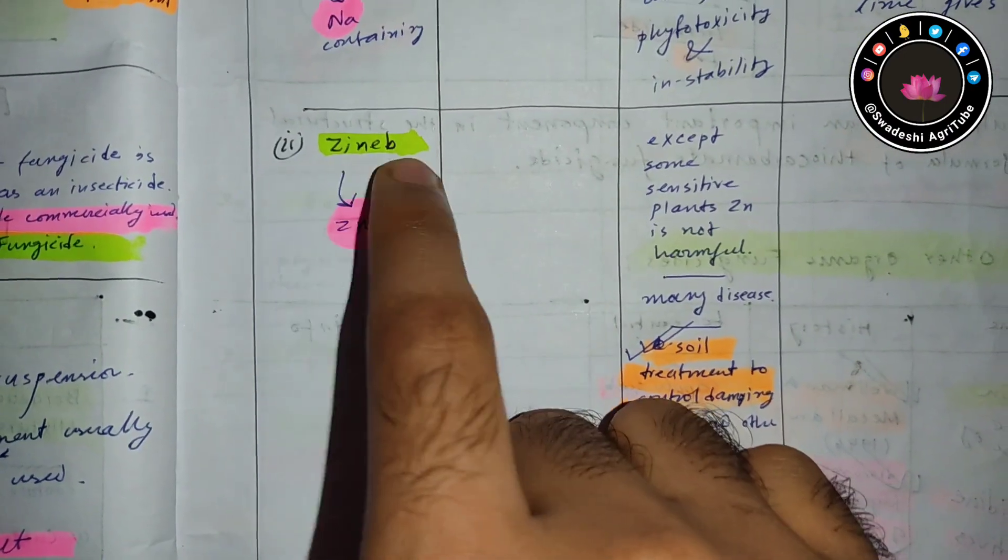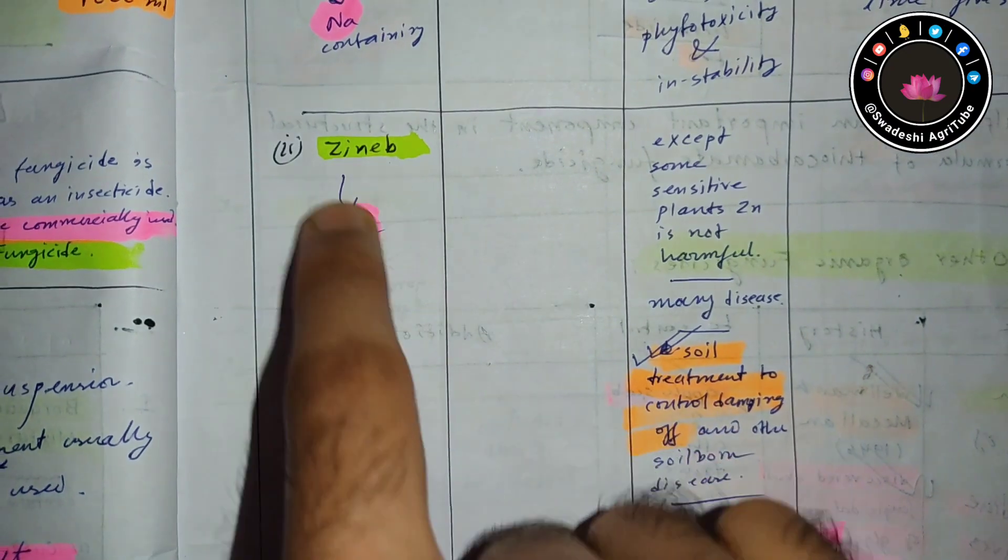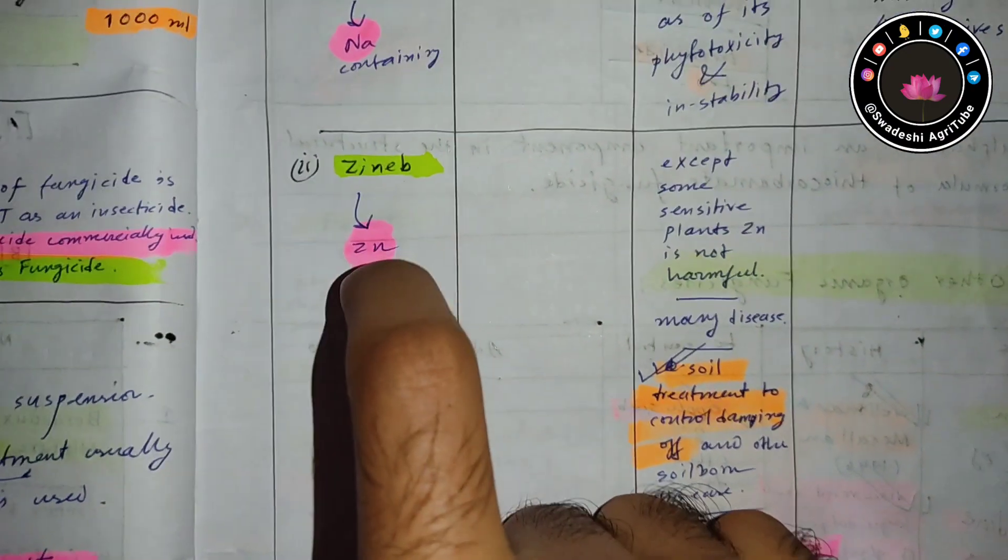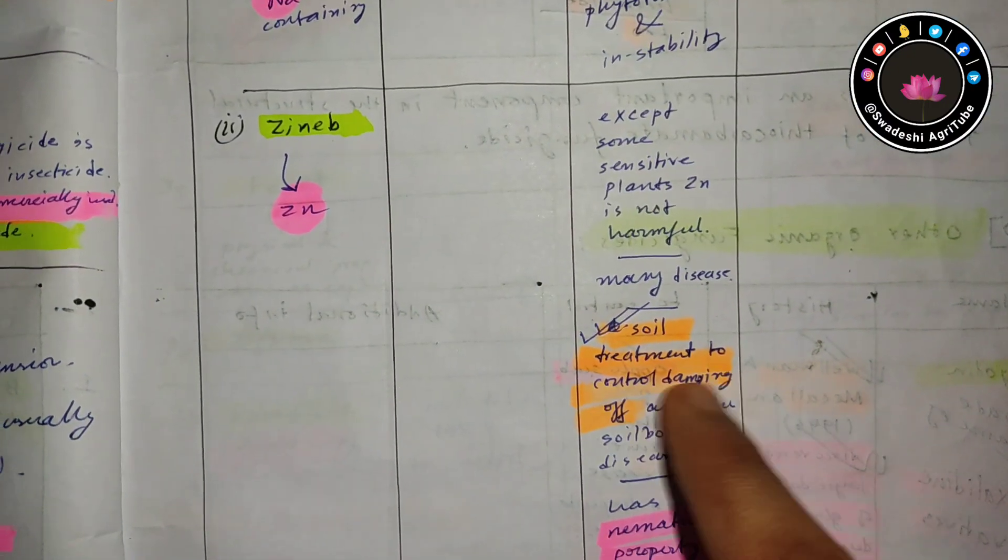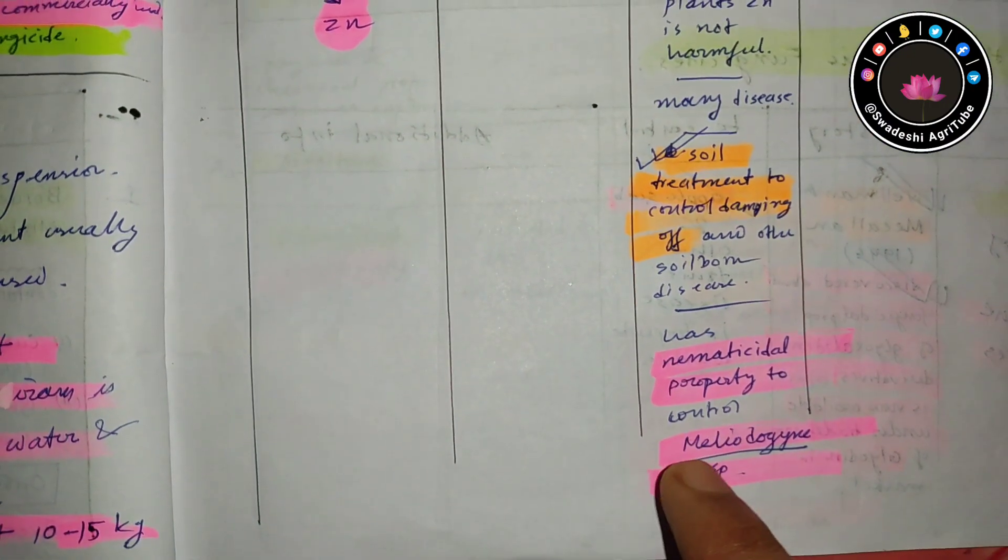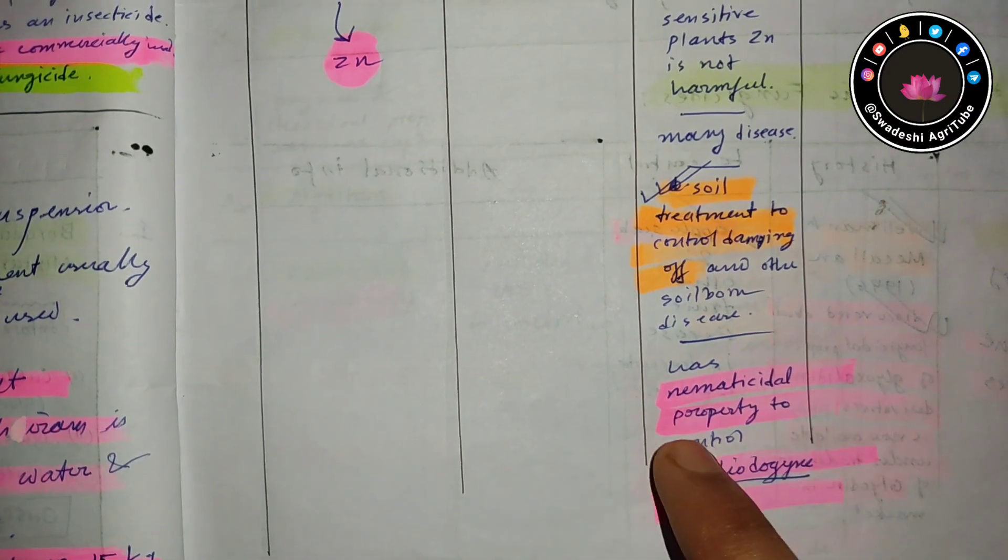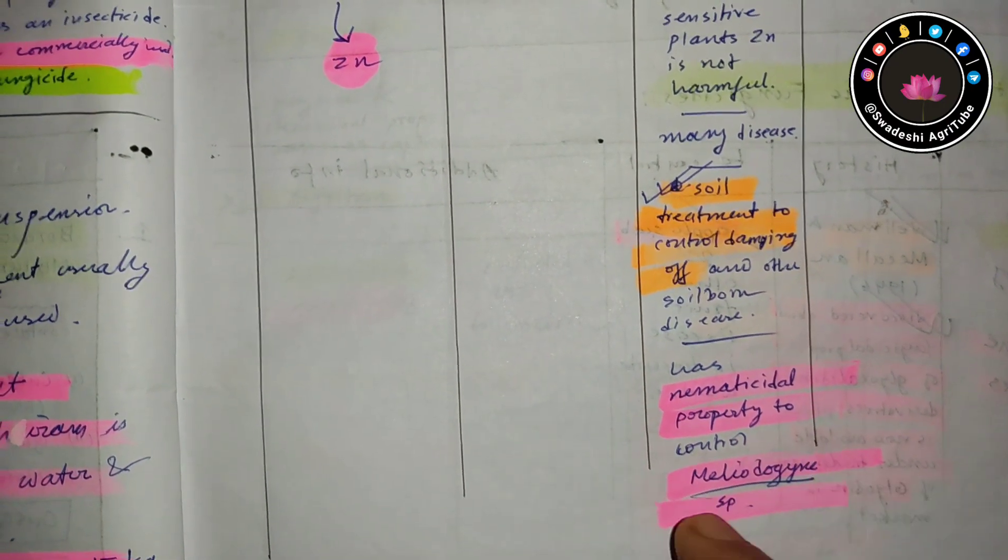If you talk about zineb, you can see from the name it contains zinc. Zineb is actually used for soil treatment and it has nematicidal properties which control many disease species of nematodes.